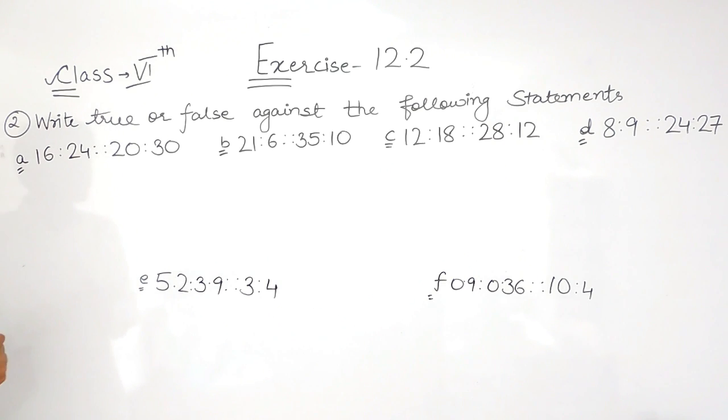In the first question I told you how to check whether two numbers are in proportion. That is, the ratio of the first two numbers should be equal to the ratio of the other two numbers.